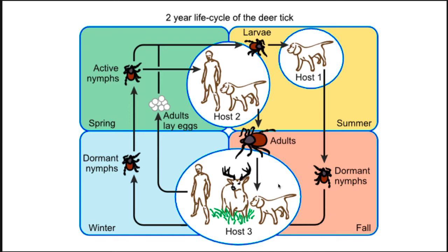A blood meal is required for the tick to advance from the larval to the nymph stage, and then again from the nymph to the adult stage. These blood meals can be taken from many different mammals, but the nymph usually feeds on small mammals such as mice, at which time it becomes infected with Borrelia. Subsequent feedings on other mammals transmit the bacterium. Adult ticks preferentially feed on white-tailed deer, making them an important reservoir of the microbe. Eggs hatch into larvae that take their first meal in the summer from small animals such as a mouse. They molt into nymphs and then go dormant until the next year. In the spring of the second year, nymphs take their second blood meal from small mammals, deer, dogs, birds, or humans, and molt into adults in the fall. A final blood meal is taken in the fall or early spring, and the adult then lays eggs.